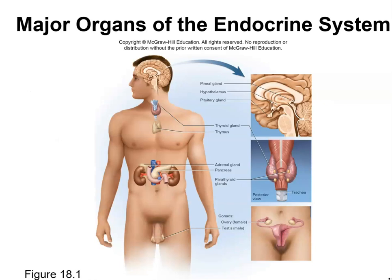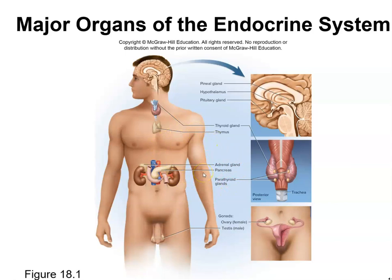The major organs of the endocrine system — something you would definitely have to know — include the pineal gland, hypothalamus, pituitary gland, thyroid gland, thymus, adrenal gland, pancreas, parathyroid glands, and the gonads: ovaries and testes. You will have to label these on the lab practicum.